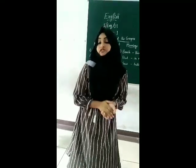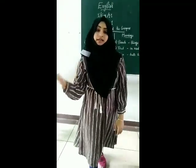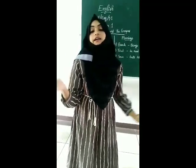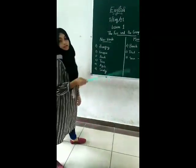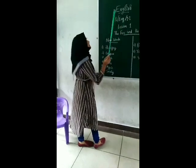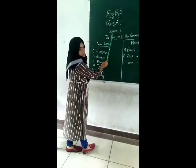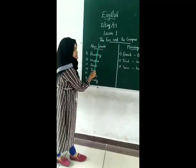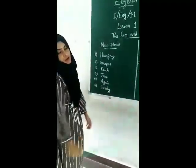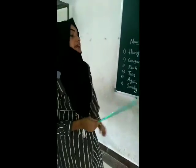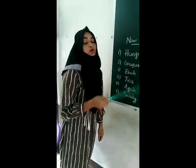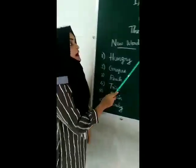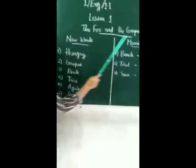Now we are going to learn some new words. Get ready. Take your notebook and write down lesson 1: The fox and the grapes. All of you try to write in neat handwriting. Take your notebook and write in good handwriting, then underline the heading and write down new words.